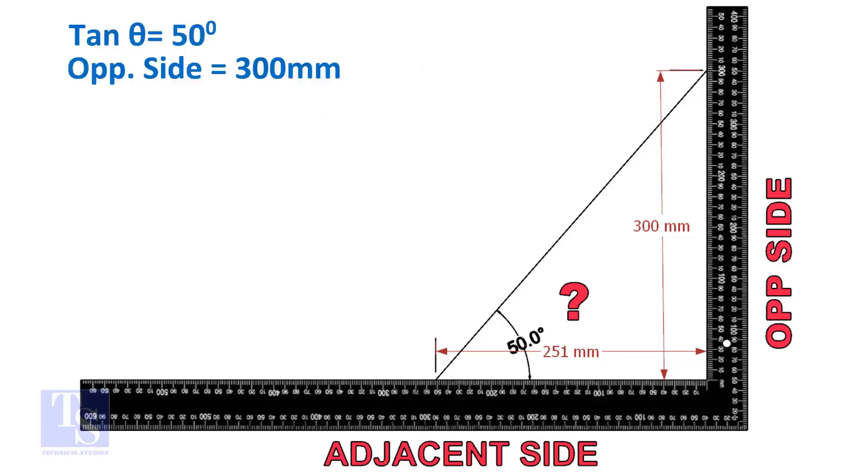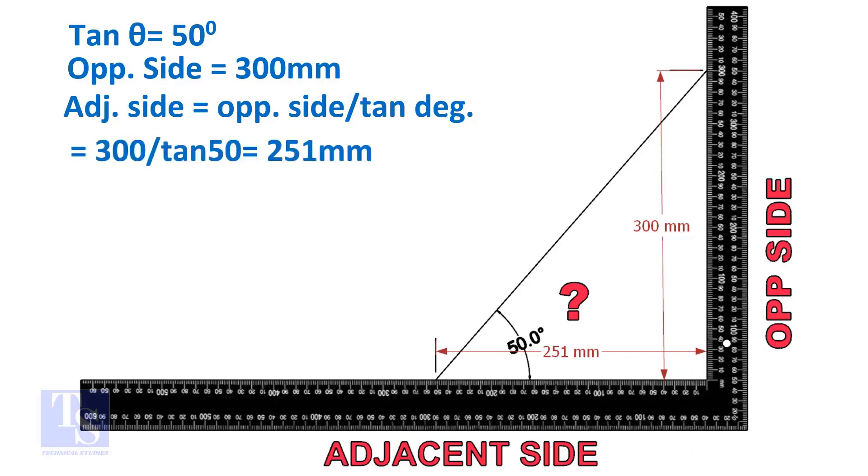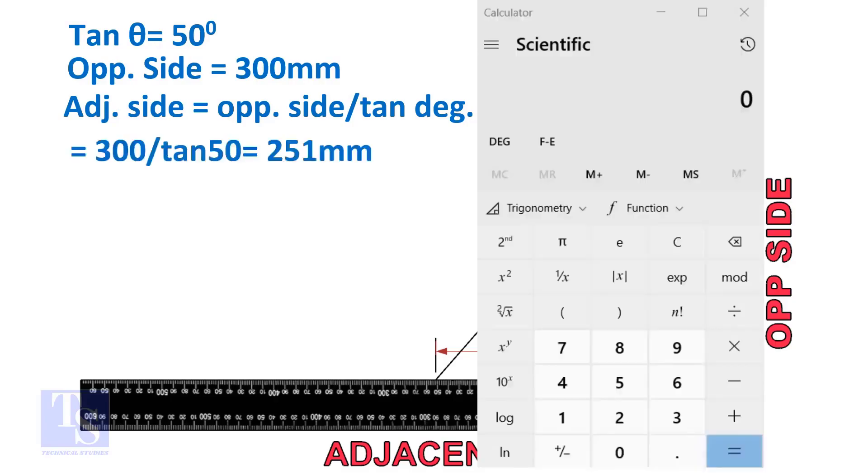But you can take any suitable dimension, as required. Adjacent side is equal to 300 divided by TAN 50 degree. Let us calculate.